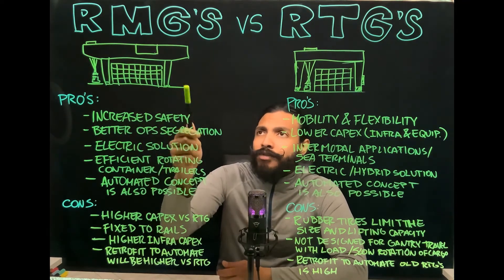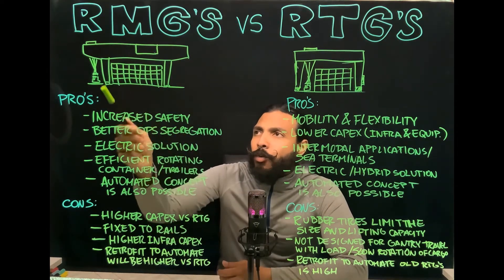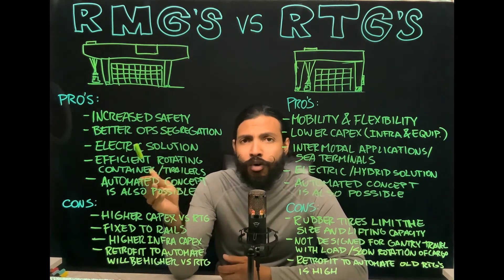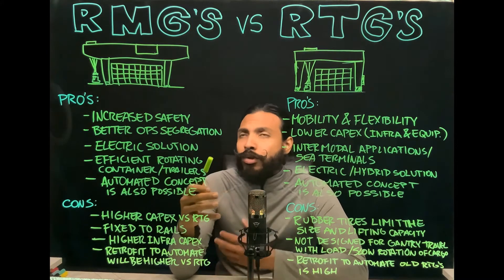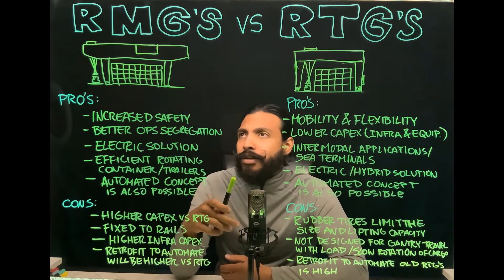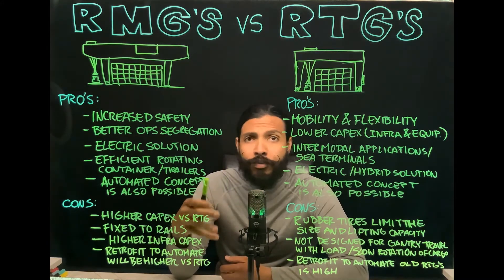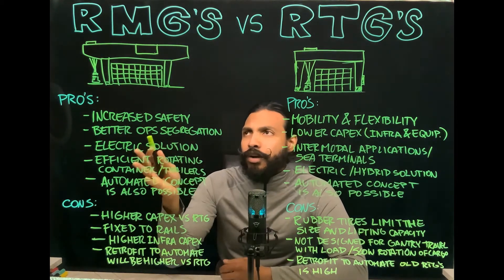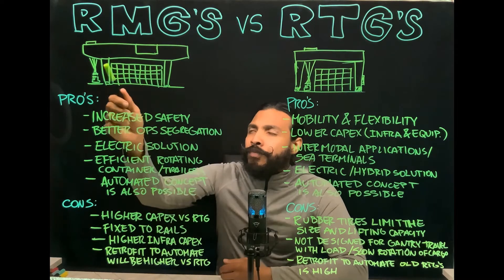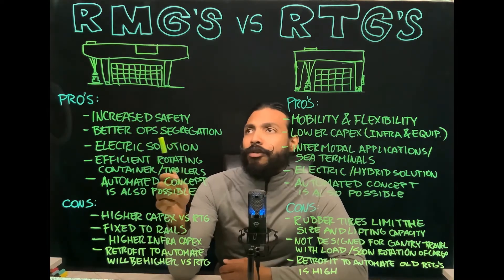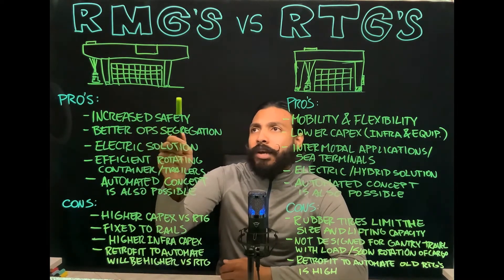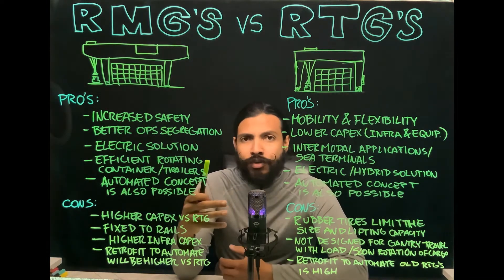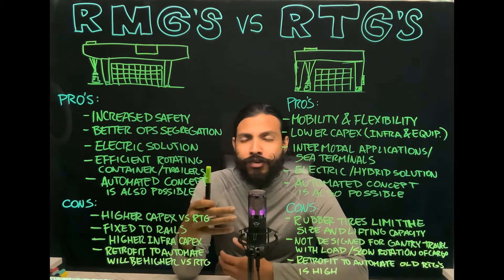Normally you can serve the land side below one cantilever and the water side below the other cantilever. You can also segregate external flows from internal flows, giving you this flexibility. For the intermodal operation, you will normally serve internal or external traffic between the cantilevers and rail between the legs — it all depends on your specific case, but it does enable better operational segregation.